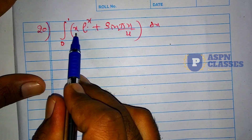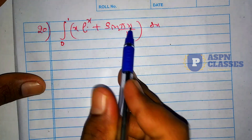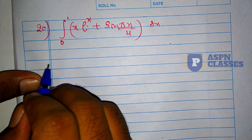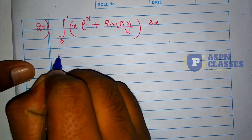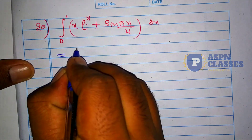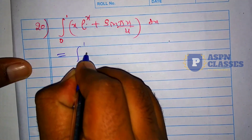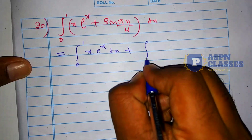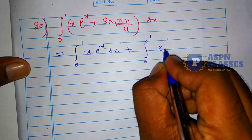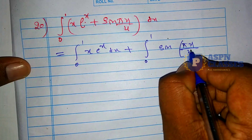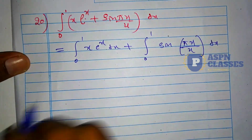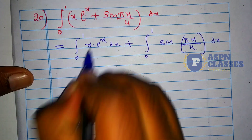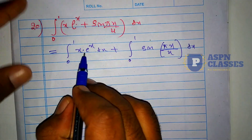Question number 20: integration of (x·eˣ + sin(πx/4))dx with limit 0 to 1. We split this into: integral from 0 to 1 of x·eˣ dx, plus integral from 0 to 1 of sin(πx/4)dx. The first integral requires integration by parts since we have two ready terms.